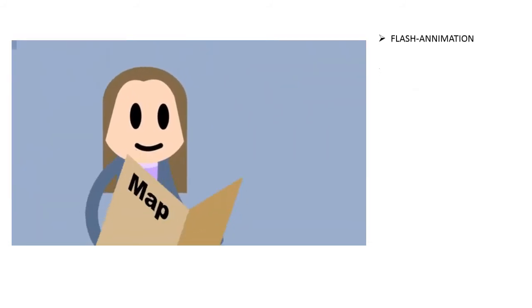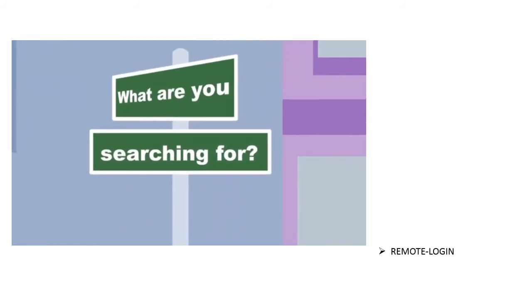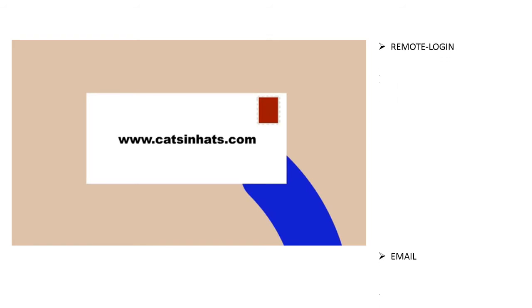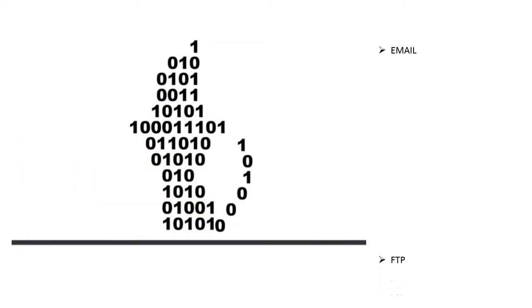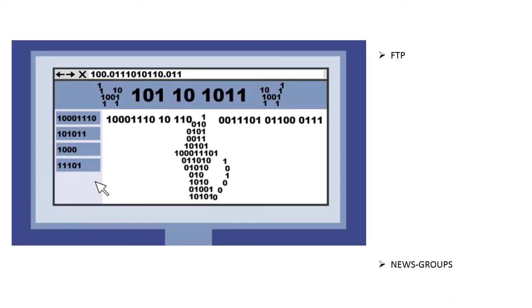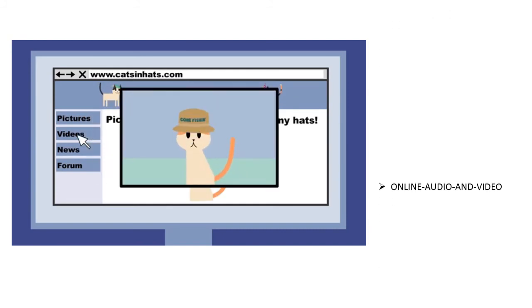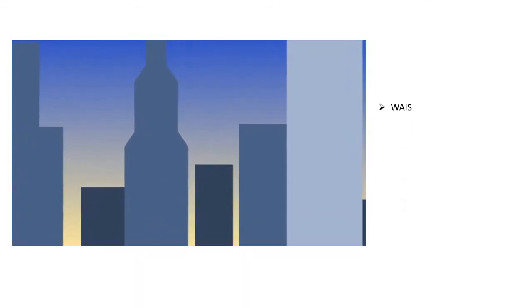VoIP over internet protocol and flash animations. To recap, the internet services include remote login, email, file transfer protocol, news groups, online audio and video, wide area information services, chat groups, voice telephony, and flash animations.